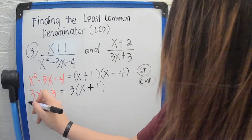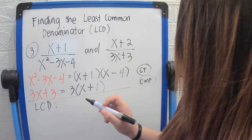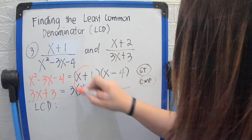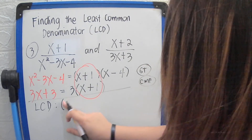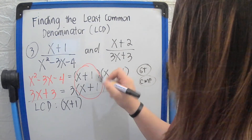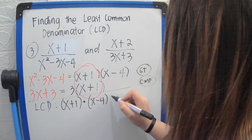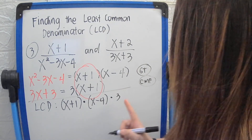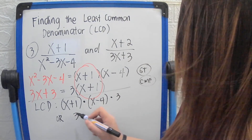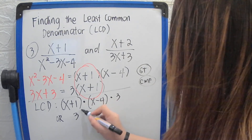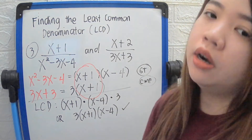Now we get the LCD. We have a common factor of (x plus 1), then the remaining factors are (x minus 4) and 3. To simplify, we write 3 first, then copy the other two factors: x plus 1 and x minus 4. So the LCD is 3(x plus 1)(x minus 4).